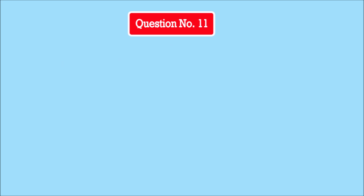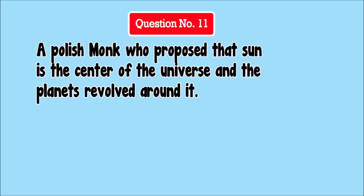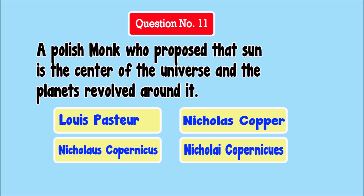Question Number 11. A Polish monk who proposed that the sun is the center of the universe and the planets revolved around it. Answer choices: Louis Pasteur, Nicholas Copper, Nicholas Copernicus, Nicolai Copernicus.